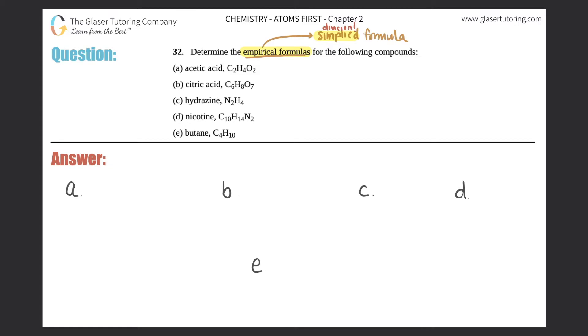So (a): acetic acid, C2H4O2. I have C2H4O2. Just remember that all these formulas they gave you are molecular formulas, right?